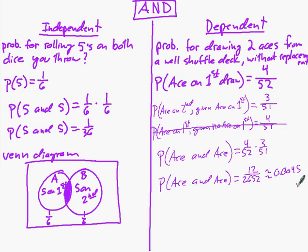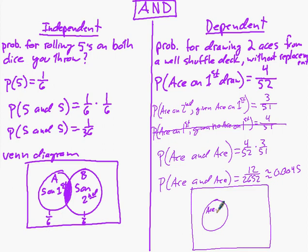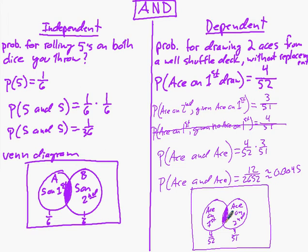You can look at this as a Venn diagram. Here's ace on the first draw — probability four out of 52. Here's probability for ace on the second draw. The circles are slightly different sizes since it's 51 cards versus 52 cards, but this is just a visualization. The 0.0045 is the intersection of the two circles. That's the AND, which is the multiplication rule — you just multiply the two probabilities together.